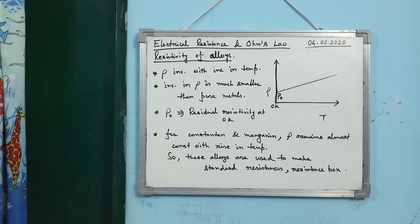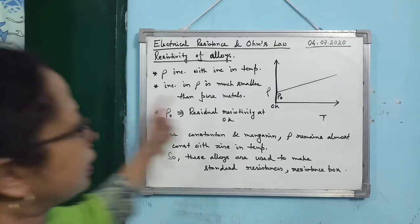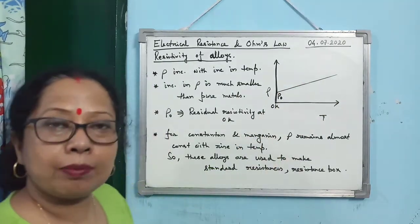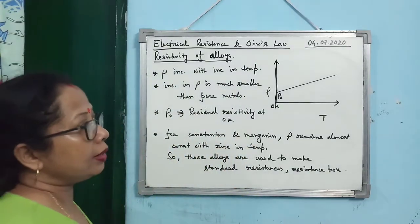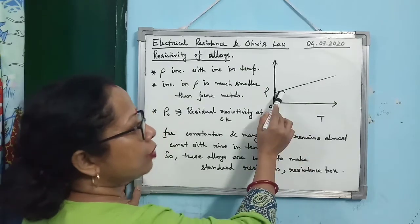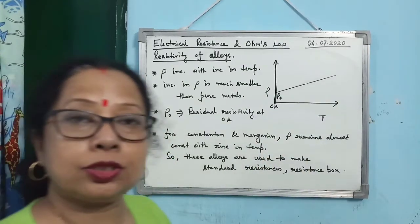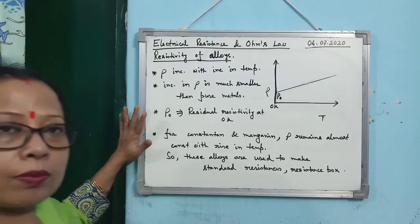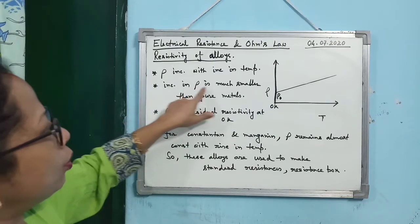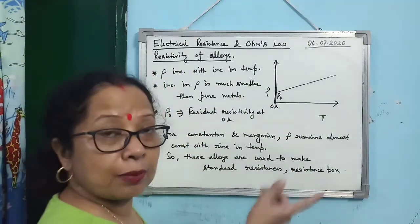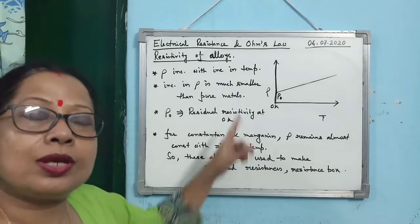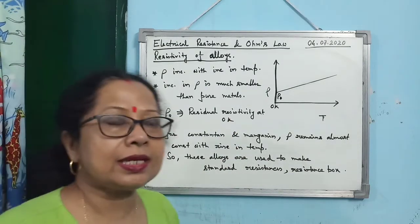Next is resistivity of alloys. For alloys, resistivity depends on temperature almost linearly — it is a straight line, not a curve like metals at low temperatures. The curve for conductors was steeper, meaning resistivity rose more steeply. For alloys, the increase in ρ is much smaller than for pure metals. ρ increases with rising temperature but the increase is much smaller. ρ₀ is the residual resistivity at 0 Kelvin.